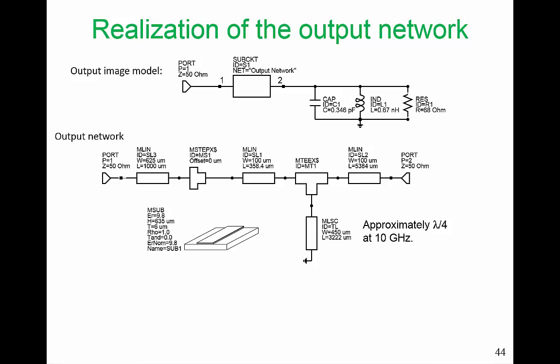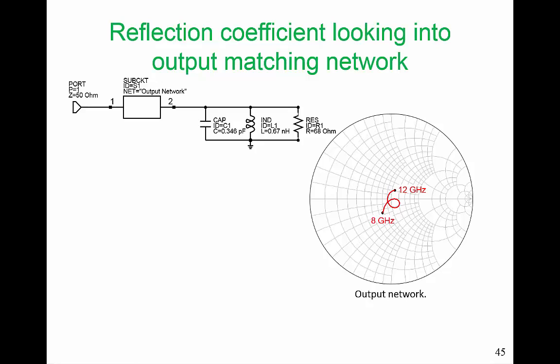We follow the same procedure in developing the output network. Again, we have this characteristic transmission line section followed by a stub, which gives us the type of characteristic that we want. The reflection coefficient looking into the output network from the outside world — our model for the packaged transistor now has a positive capacitance, positive inductance, and a resistance, all coming from our image model. Looking into the output network from the outside world, ideally we should see 50 ohms, and from 8 to 12 gigahertz we just loop around that origin point where the reflection coefficient is equal to zero. It reminds you a little bit of a filter design.